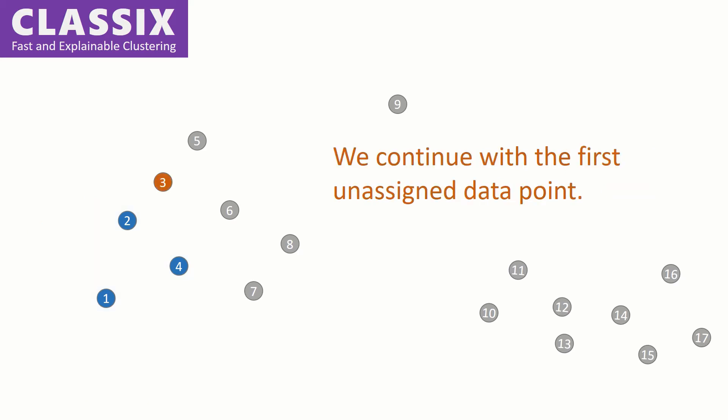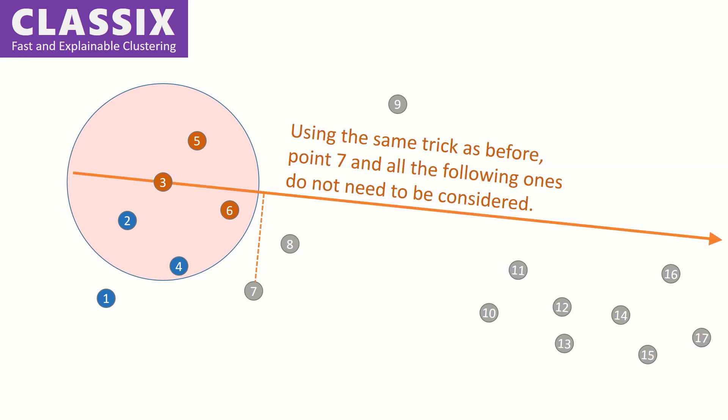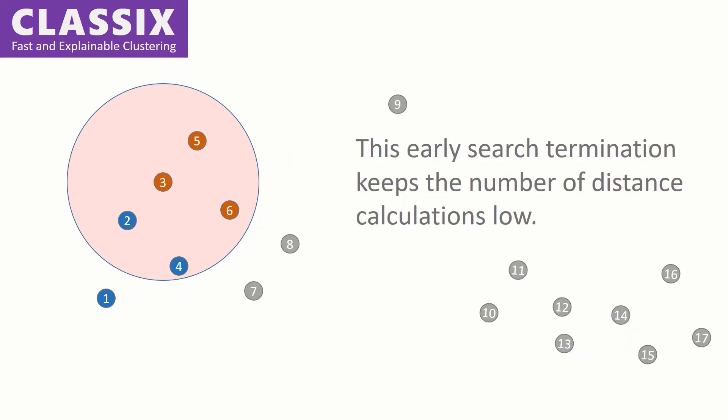We continue with the first unassigned data point and group all data points within the predefined radius. Using the same trick as before, point 7 and all the following ones do not need to be considered. This early search termination keeps the number of distance calculations low.